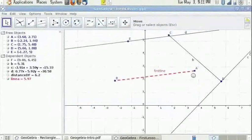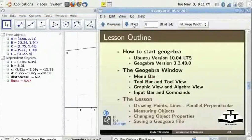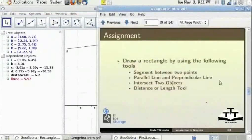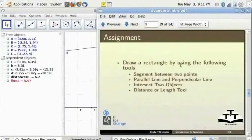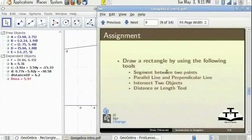Finally, the assignment. In the assignment, I would like you to draw a rectangle by using the segment between two points tool. Start with that, then use the parallel line and perpendicular line, the intersect two objects and the distance or length tools.